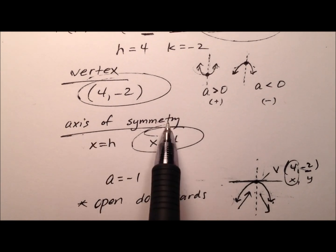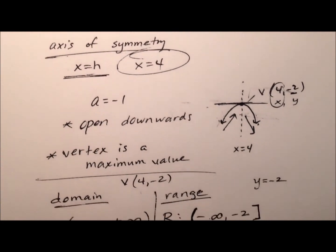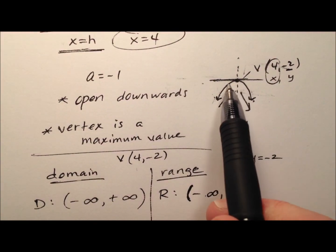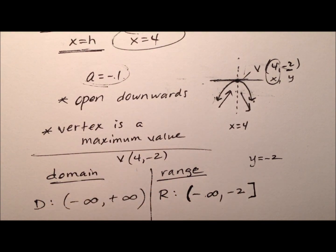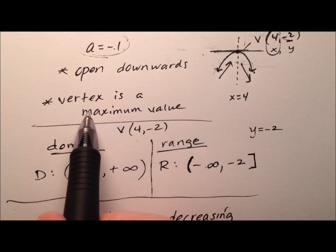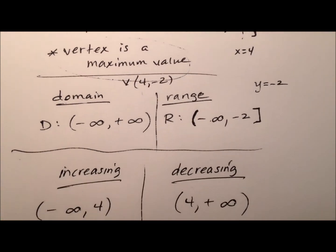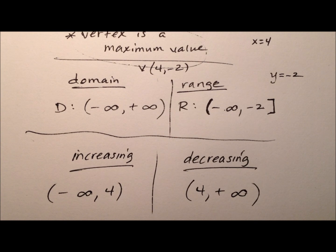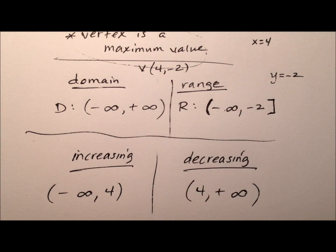We also talked about the axis of symmetry, which is x equals h. We talked about this example having a parabola opening downward because the a value was negative 1, or less than 0. Because of that, the vertex is a maximum of the function. Then we found the domain and range. Let's go ahead and end this video by showing you a graph of this function that ties all this information together.